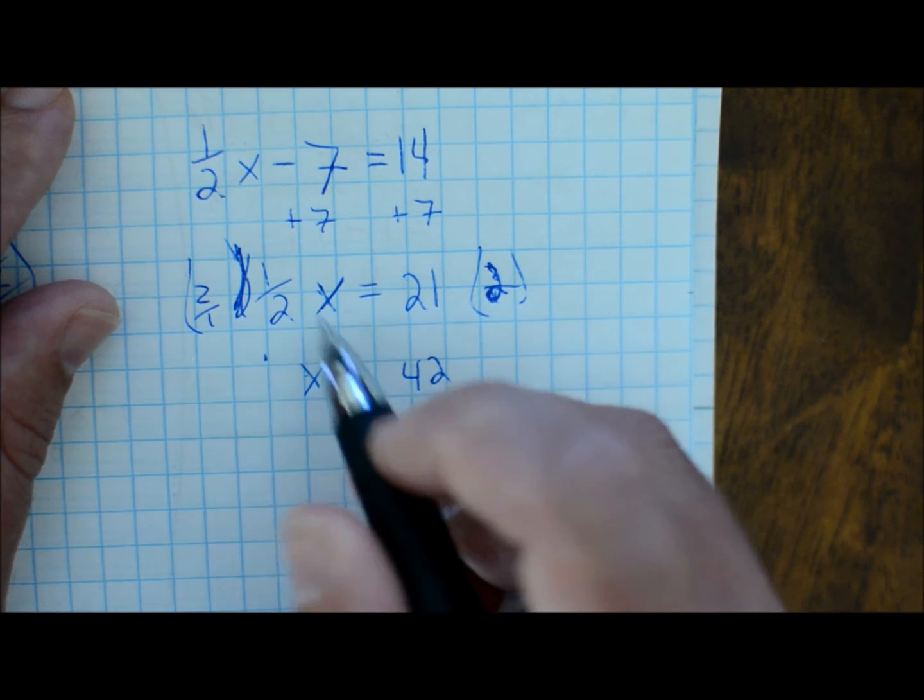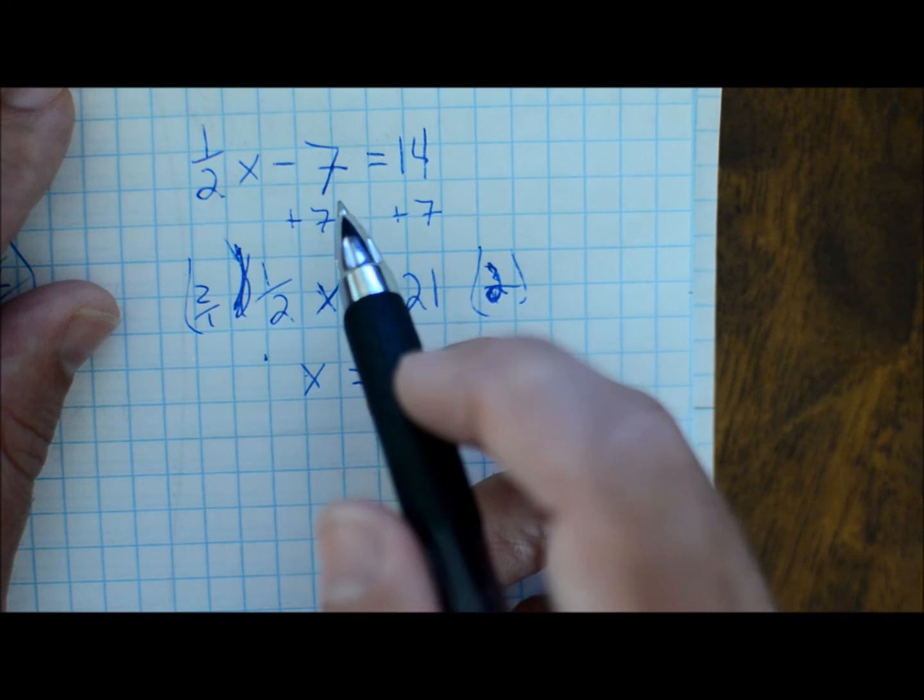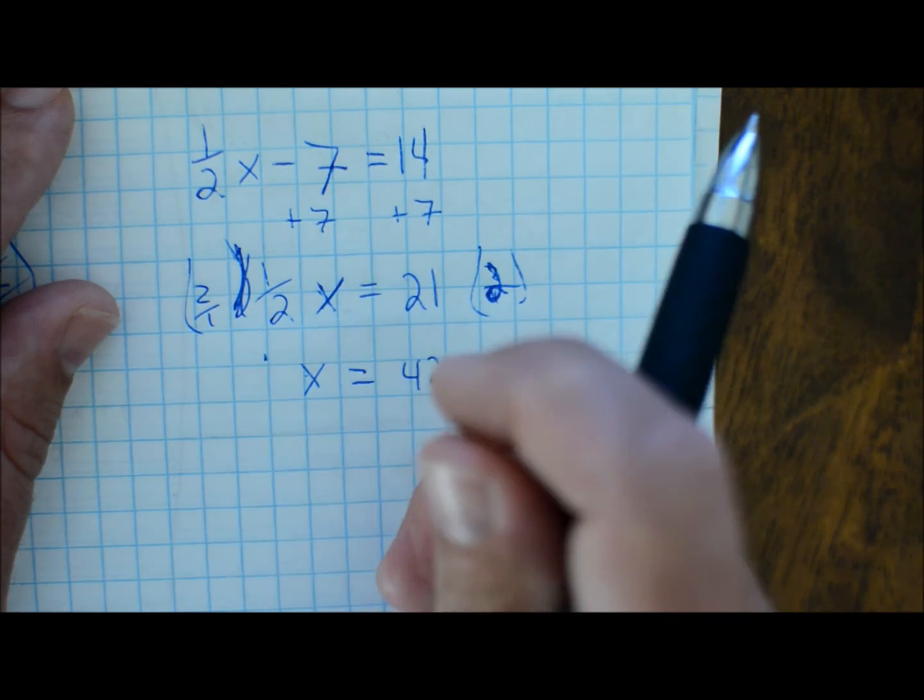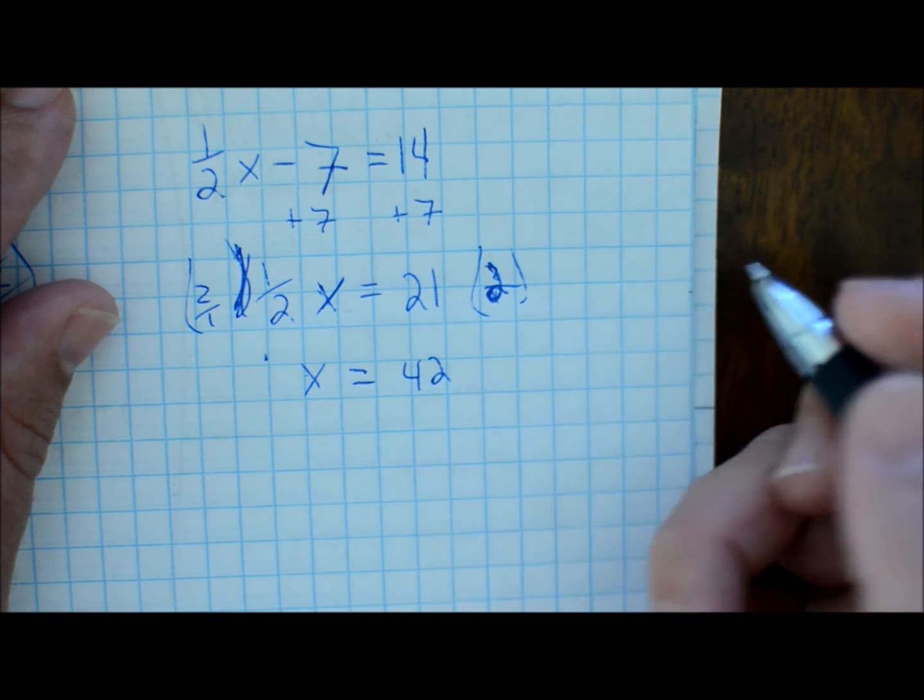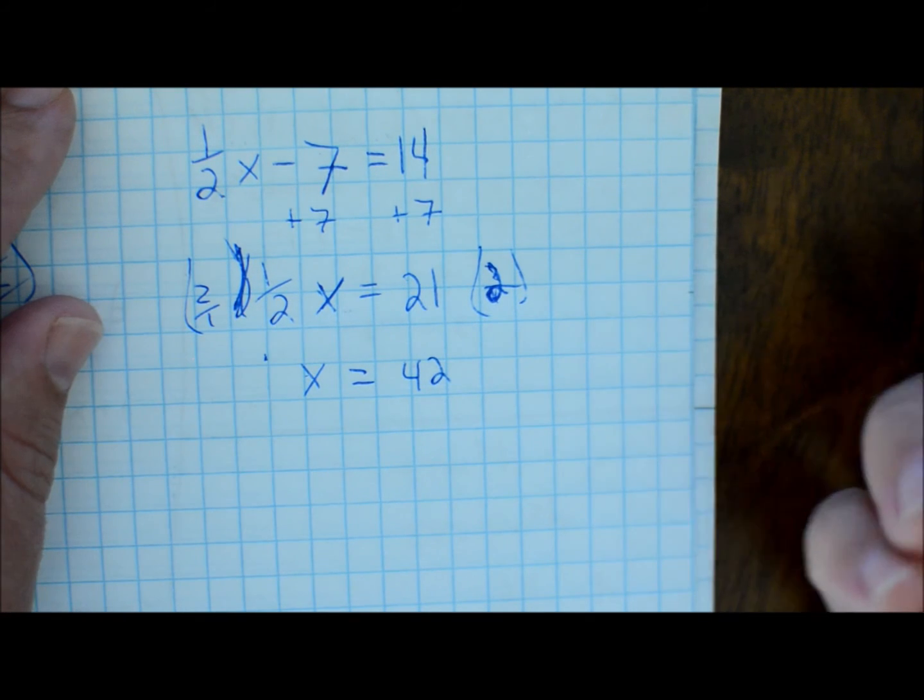So, we've got a solution now. We know that x has to be 42, which means that there's not a restriction, because we have, specifically, we have a solution.